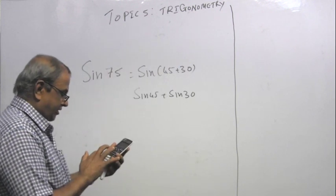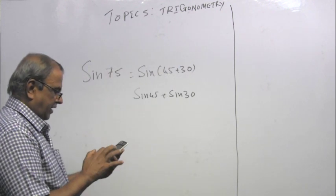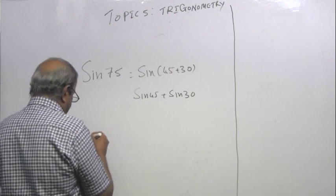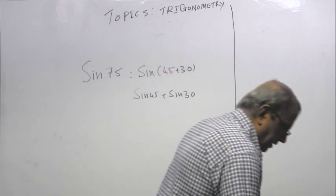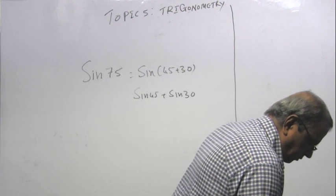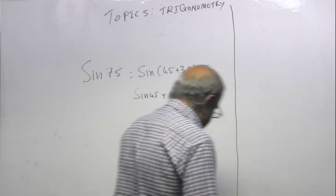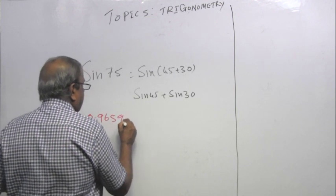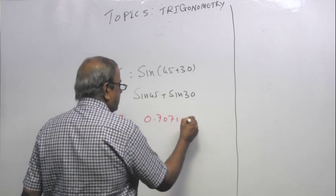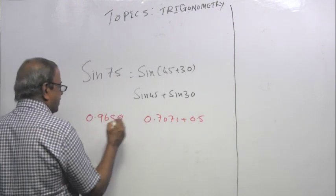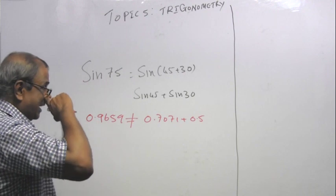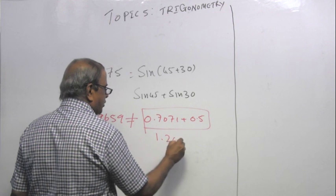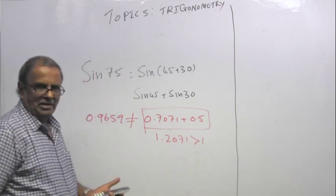Coming back to this. What is sin 75? Sin 75 is 0.9659. My pen is playing up. Let me use the red one.